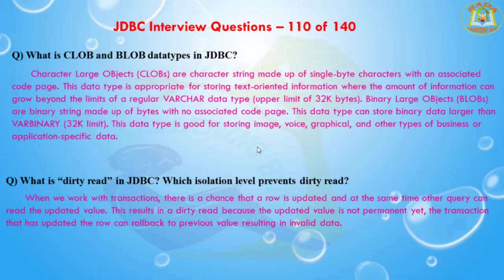The next question is: what is dirty read in JDBC, and which isolation level prevents it? When we work with transactions, there is a chance that a row is updated and at the same time another query can read that updated value. This results in a dirty read because the updated value is not permanent — the transaction that updated the row can be rolled back, resulting in invalid data. Dirty read is prevented by the isolation levels: TRANSACTION_READ_COMMITTED, TRANSACTION_REPEATABLE_READ, and TRANSACTION_SERIALIZABLE.